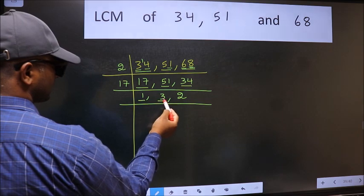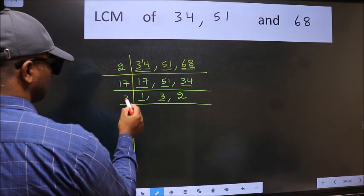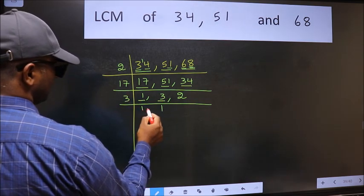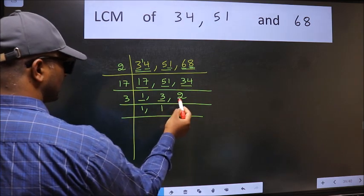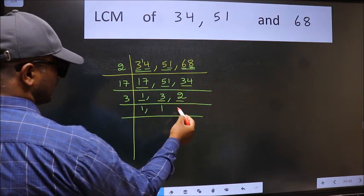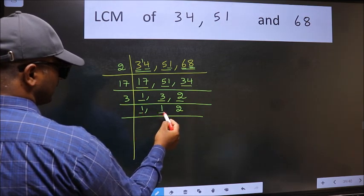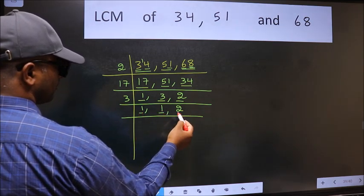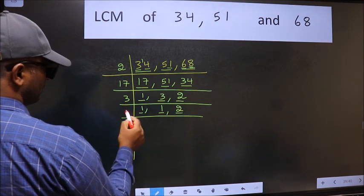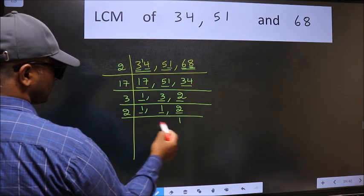Now we got 1 here, so focus on the next number 3. 3 is a prime number, so 3 ones are 3. The other number 2 is not divisible by 3, so write it down as it is. Now we got 1 here and here, so focus on the next number 2. 2 is a prime number, so 2 ones are 2.